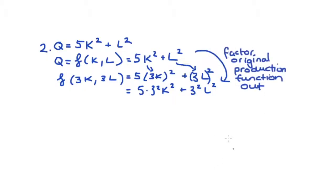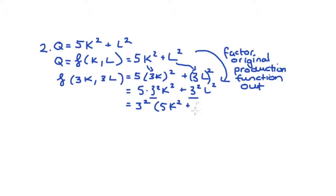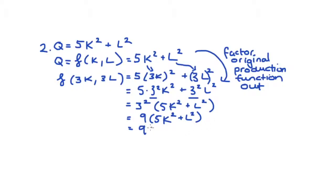I'm going to factor out the original production function just like I did in the last question. Our original function was just five times K squared plus L squared, and the revised function is almost exactly the same except each term is multiplied by three squared. So if I factor out three squared, I get three squared times five times K squared plus L squared. Now three squared is just equal to nine, so we get nine times the expression for our original output. This is increasing returns to scale — we increased all of our inputs by some amount and our output increases by more than that factor.